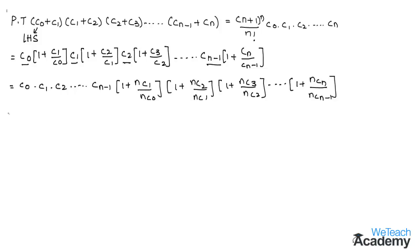Let us recall the formula: nCr divided by nC(r-1) is equal to (n - r + 1) divided by r.